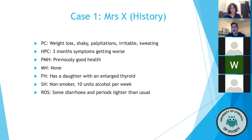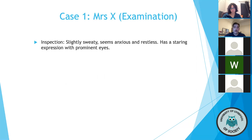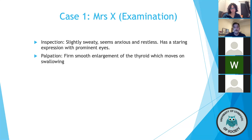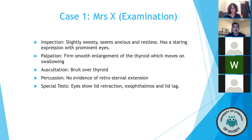On review of symptoms, she has a little bit of diarrhea and her periods have been lighter than usual. On examination, she's slightly sweaty, seems anxious at rest, and is restless. She has a staring expression with prominent eyes. On palpation of the thyroid gland, you note a firm and smooth enlargement which moves on swallowing. You auscultate a bruit — turbulent blood flow through the thyroid — and on percussion there's no evidence of retrosternal extension.